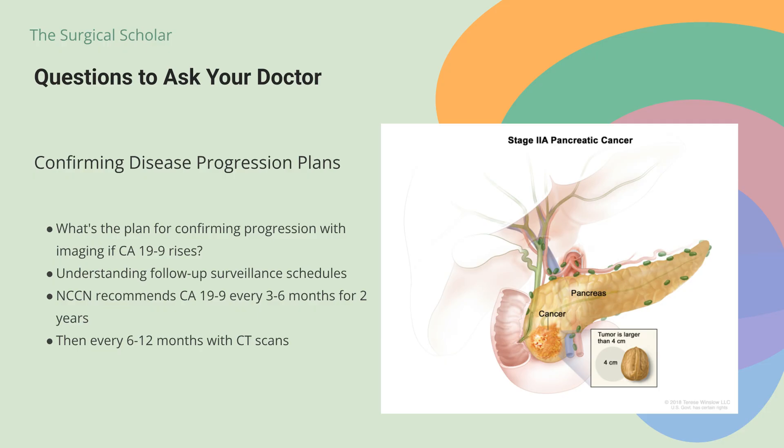If you're caring for a loved one with pancreatic cancer, ask about the frequency of CA-19-9 monitoring during their follow-up care. Consensus guidelines from the National Comprehensive Cancer Network recommend CA-19-9 determinations and follow-up CT scans every three to six months for two years, then every six to twelve months.